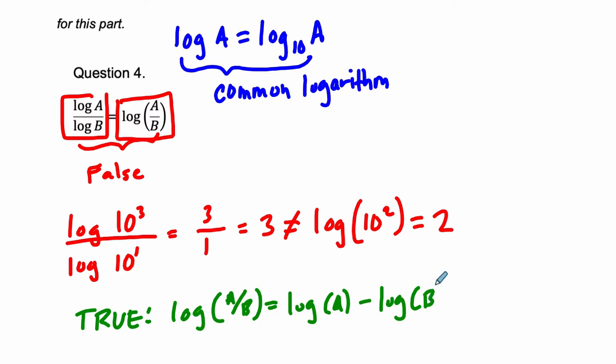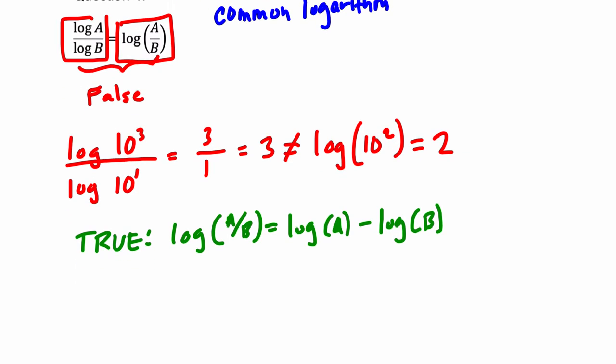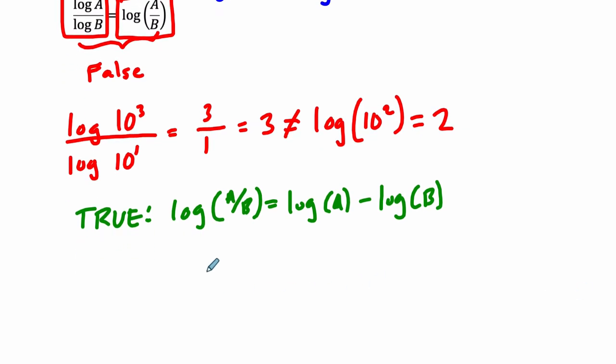Now this just goes right back to the laws of exponents. Logs deal with the exponents of exponential terms. So this is just relating the idea. If you have, let's say, 10 to the third and you divide by 10 to the first, that equals 10 to the 3 minus 1. We subtract the exponents. So if you're dividing two powers of 10, you subtract the exponents.